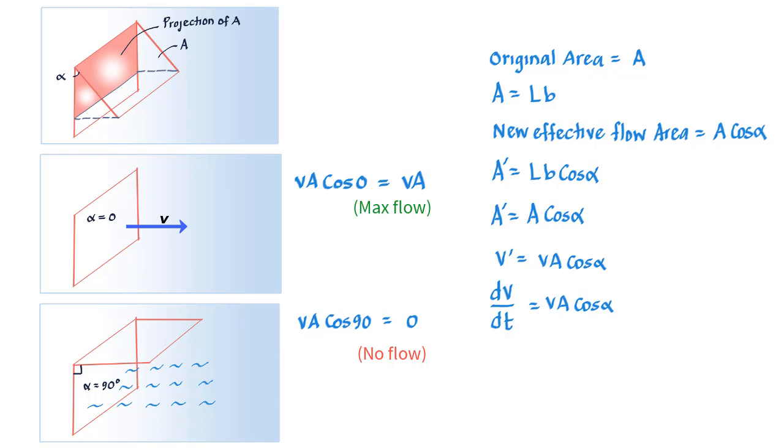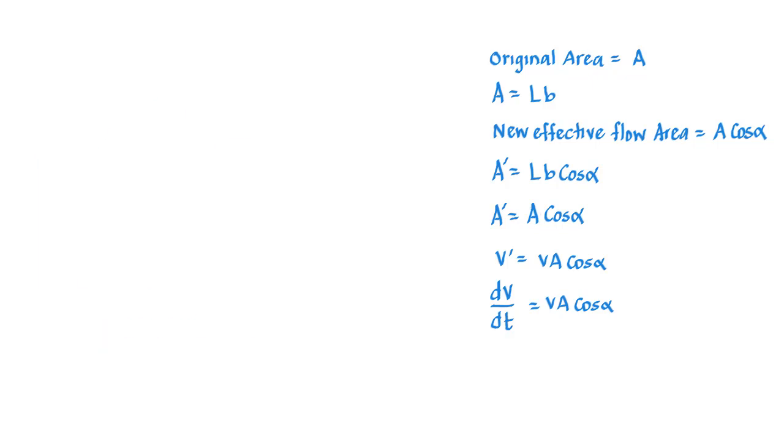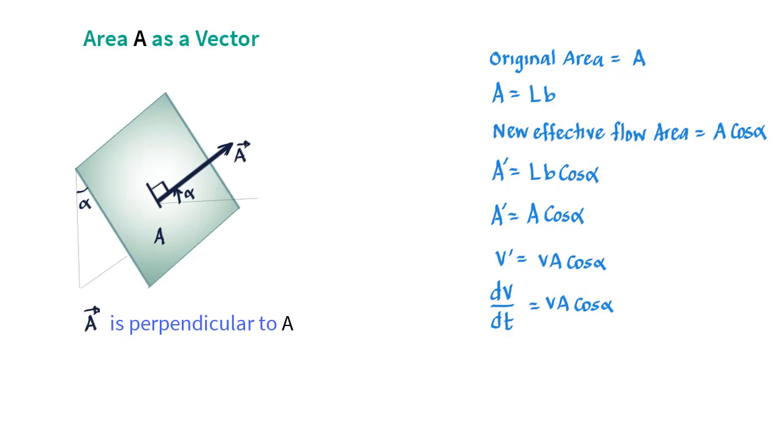Going forward, you need to know that when we deal with flux, we use the concept of area vectors. Yes, area can also be a vector. What we do is we say that A is a vector with magnitude A and direction that is perpendicular to the plane we are discussing.